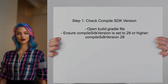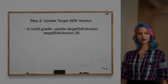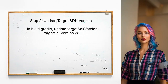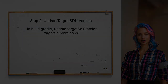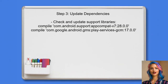To resolve the error, first check the compile SDK version in your build.gradle file — the user is currently using compile SDK version 24. Next, update the target SDK version; it should match or exceed the compile SDK version to avoid compatibility issues. After updating the SDK versions, also ensure that all dependencies are compatible with the new SDK version, which may involve updating the support libraries.